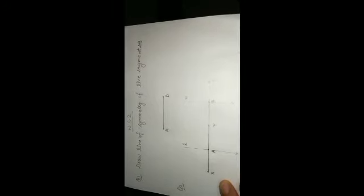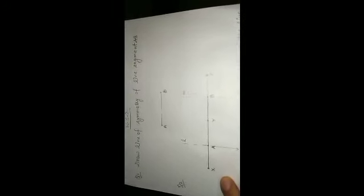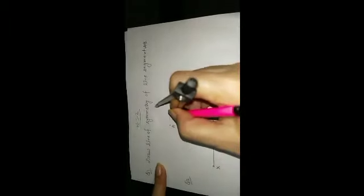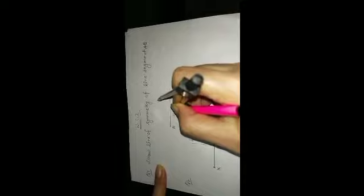Moving to the next question: draw the line of symmetry of line segment AB. You can draw the line of symmetry of any line segment by drawing its perpendicular bisector. This AB is of length 4 cm. Open your compass to more than half of 4 — that is, more than 2, say 2.5 or 3.